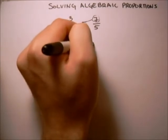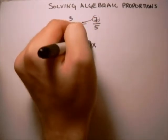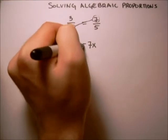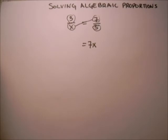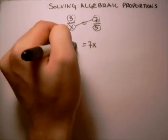So we'll get on the right-hand side x times 7 or just 7x, and then we'll take what we have on top here and multiply it with what we have on the bottom here, and so on the left-hand side we'll get 15.